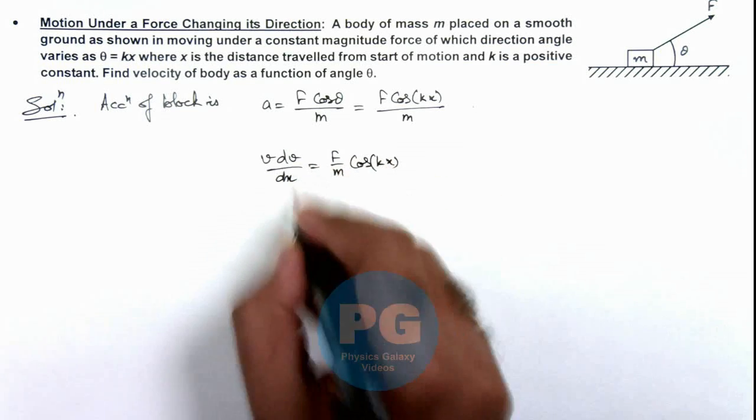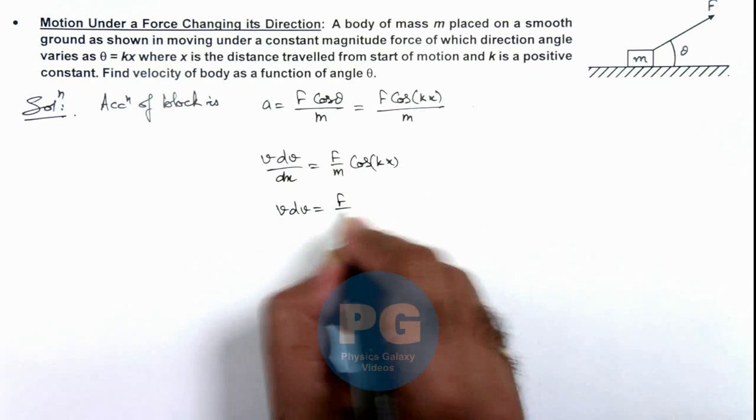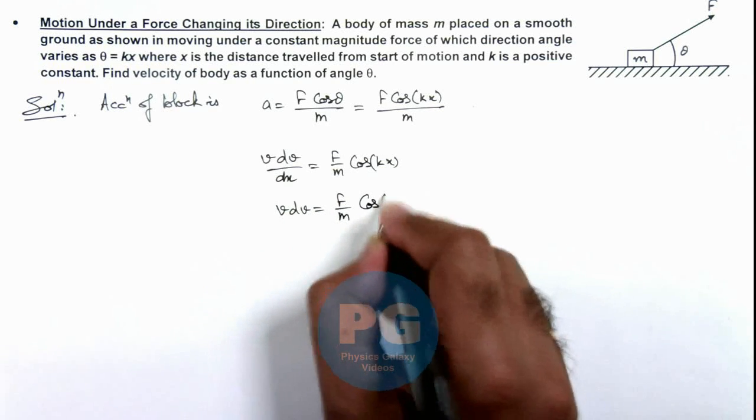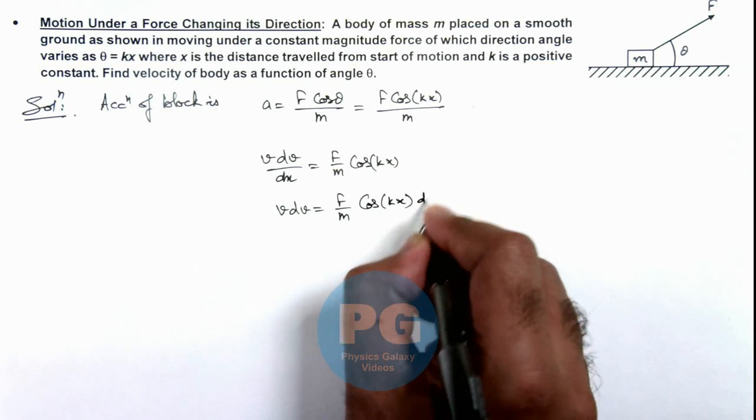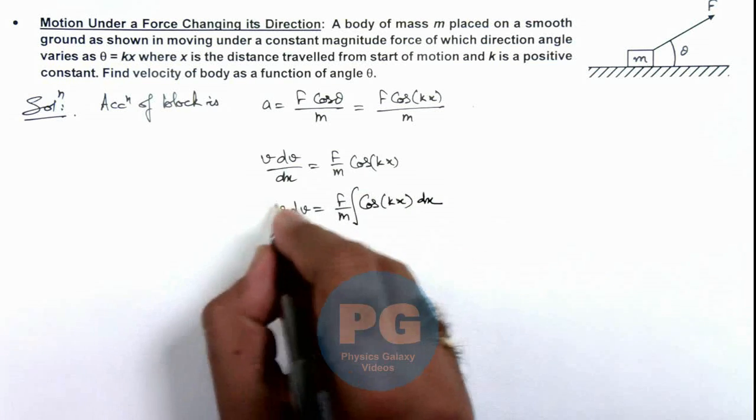Further we can write v dv equals f by m cos kx multiplied by dx, and if we integrate this term.